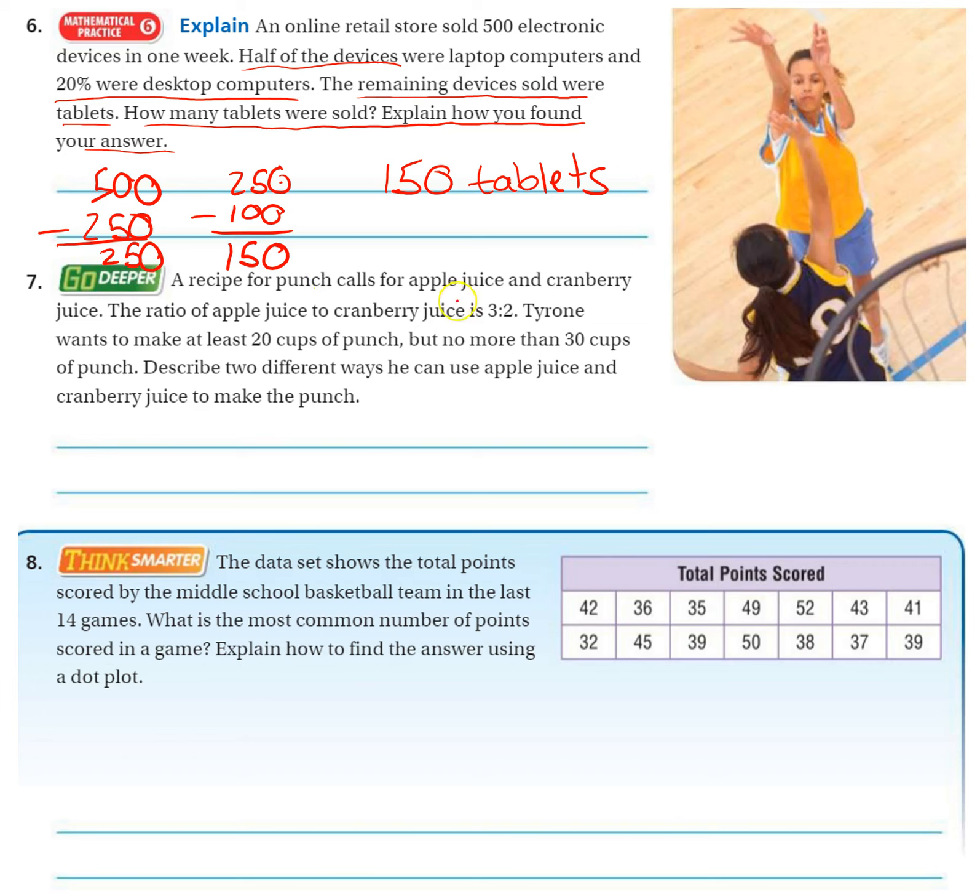A recipe for punch calls for apple juice and cranberry juice. The ratio of apple juice to cranberry juice is three to two. Tyrone wants to make at least 20 cups of punch, but no more than 30 cups of punch.